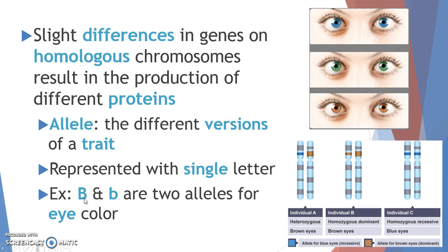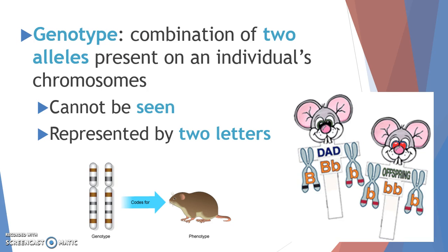We don't get just one chromosome — we get two chromosomes, and each chromosome contains one allele. Mom gives us one chromosome with one allele, and dad gives us one chromosome with another allele. The combination of those two alleles determines an individual's genotype. When you see the word genotype, think of a person's genes. You cannot see a person's genes — they're inside your DNA — but in genetics problems, we represent a genotype with two letters.